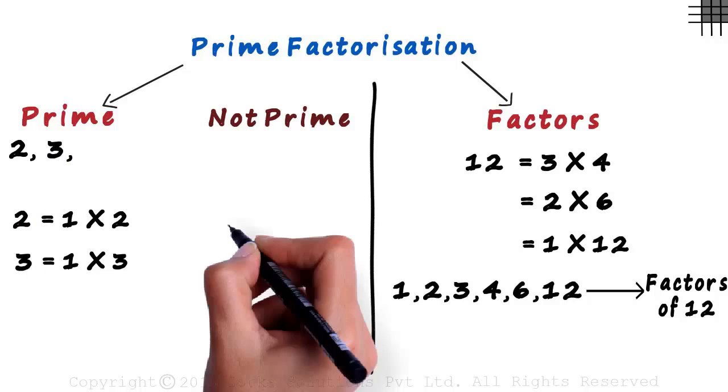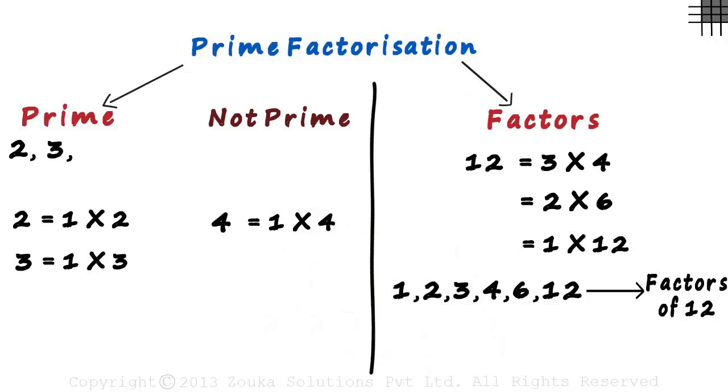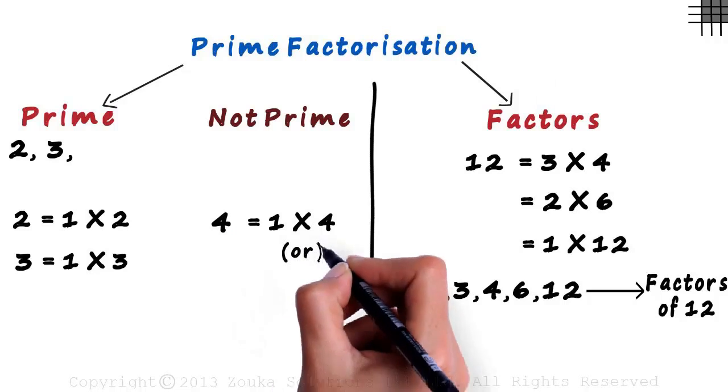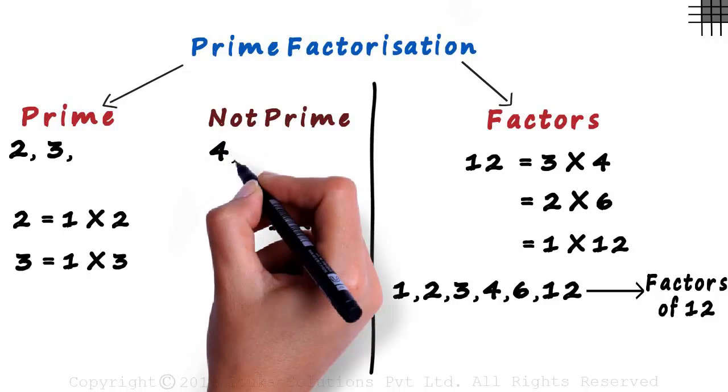What about the number 4? It can be written as 1 multiplied by 4. Does that mean it is a prime number? Hang on a moment. It can also be written as 2 times 2. As the number 4 has factors other than 1 and itself, it is not a prime number.